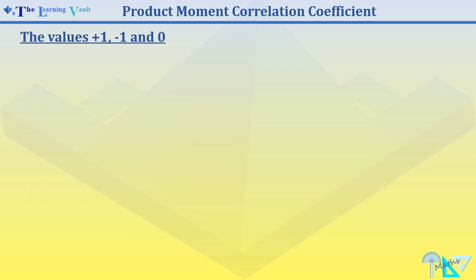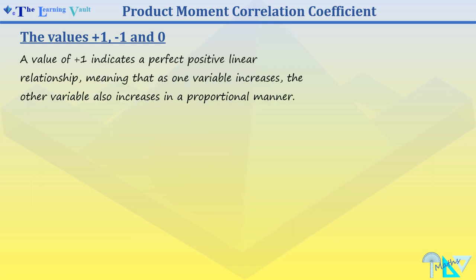Let's look at what the values plus 1, negative 1, and 0 mean. The value of plus 1 indicates a perfect positive linear relationship, meaning as one variable increases, the other variable also increases in a proportional manner.